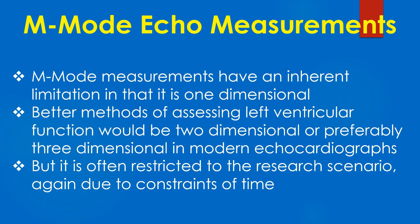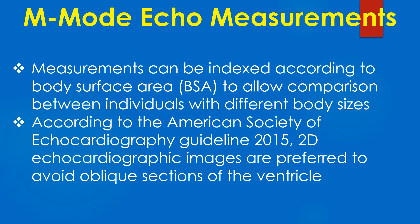M-mode measurements have an inherent limitation in that it is one-dimensional. Better methods of assessing left ventricular function would be two-dimensional or preferably three-dimensional in modern echocardiographs, but this is often restricted to the research scenario due to constraints of time. Measurements can be indexed according to body surface area to allow comparison between individuals with different body sizes. According to the American Society of Echocardiography guideline 2015, 2D echocardiographic images are preferred over M-mode to avoid oblique sections of the ventricle.